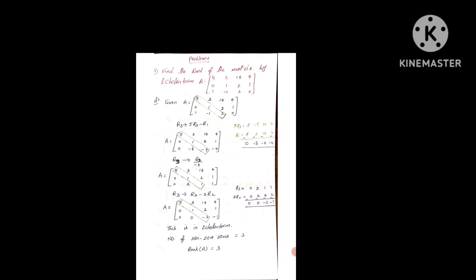First we identify the principal diagonal elements: 5, 1, 2 are the principal diagonal elements. Below these principal diagonal elements we have to make zeros. R2 already has 0 there, no need to change. We apply R3 operation: R3 changes to 5R3 minus R1. Doing the subtraction we get 0, minus 8, minus 4, minus 4.